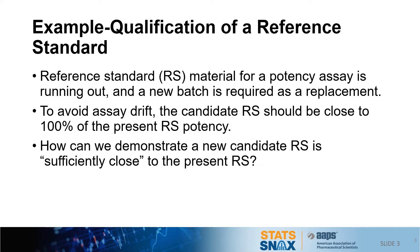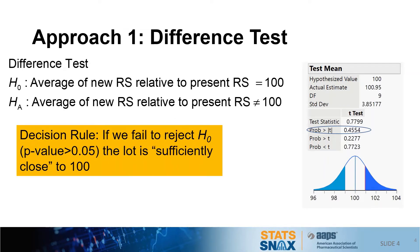The question for the statistical test is: how can we demonstrate that a new candidate reference standard is sufficiently close to 100%? The first approach is called the difference test. In the difference test, we conduct a hypothesis test where the null hypothesis says the average of the new reference standard relative to the present reference standard is equal to 100%, and the alternative says it's something different than 100%. This is the kind of hypothesis test introduced in a first statistics course — it's called a difference test because the alternative simply says the true value is different from the null value of 100.